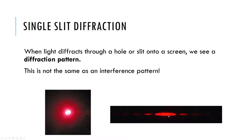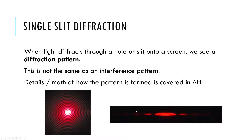There does seem to be some interference happening because we have dark spots and bright spots, but this is not the same as the two-source interference pattern. Think of diffraction and interference differently, even though — especially with HL students — there is some interference going on behind the scenes within the diffraction. This is just diffraction: light specifically going through one opening, so we essentially have one source. We will talk about how we can treat that one source as a whole bunch of sources to account for this interference with HL content.